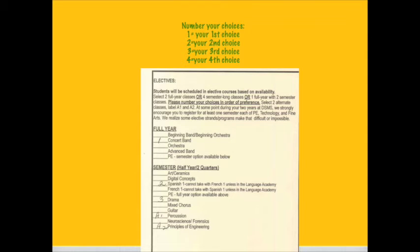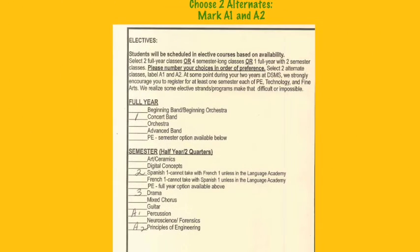In this example, I have chosen band as my first choice, Spanish as my second choice, and Drama as my third choice. It is important that you rank order your choices. If you are choosing semester courses, you would number your choices with a one by your first choice, a two by your second choice, a three by your third choice, and a four by your fourth choice. Then you will indicate your alternate choices — put an A next to your first alternate choice and an A2 next to your second alternate choice. If we can't give you your first four choices, we will go to your alternates.